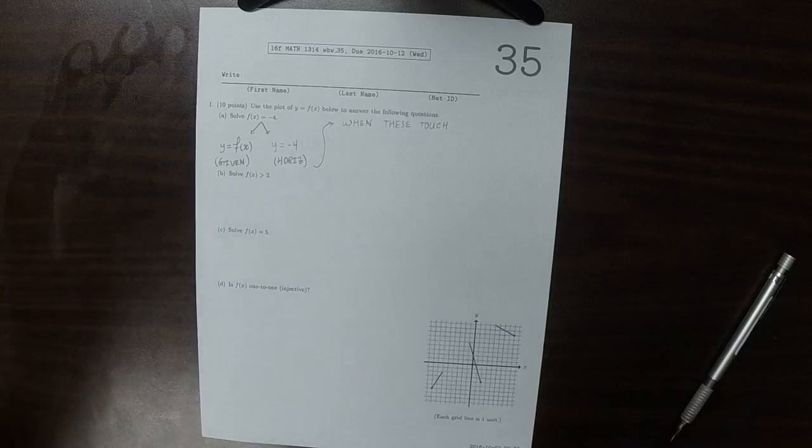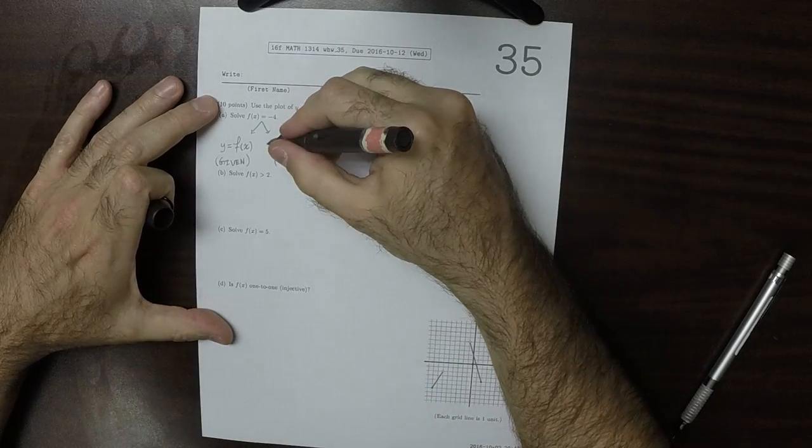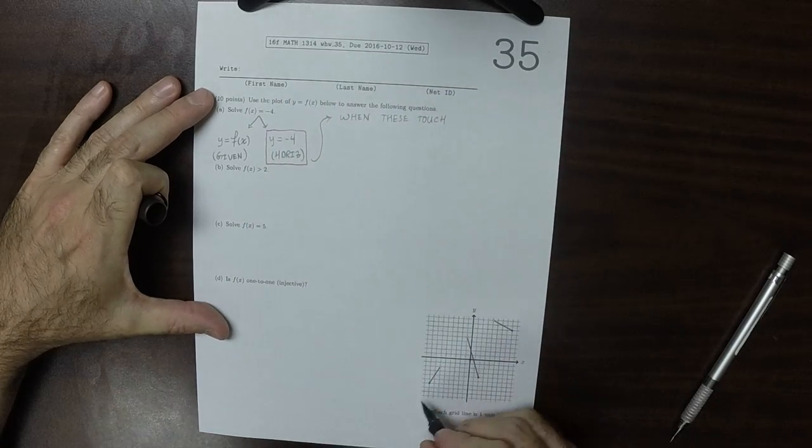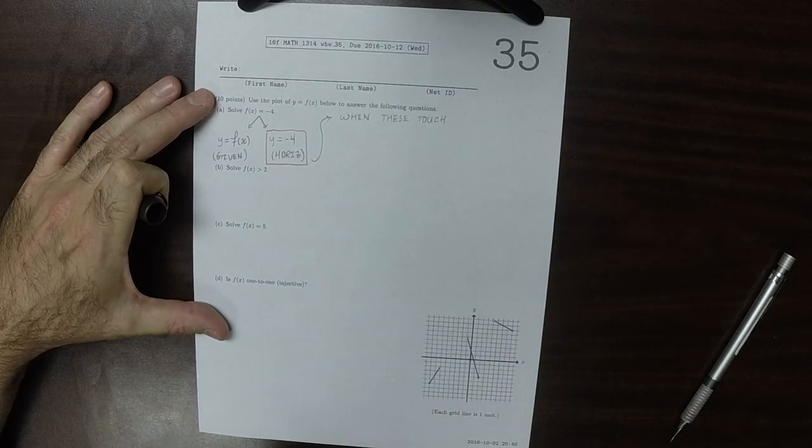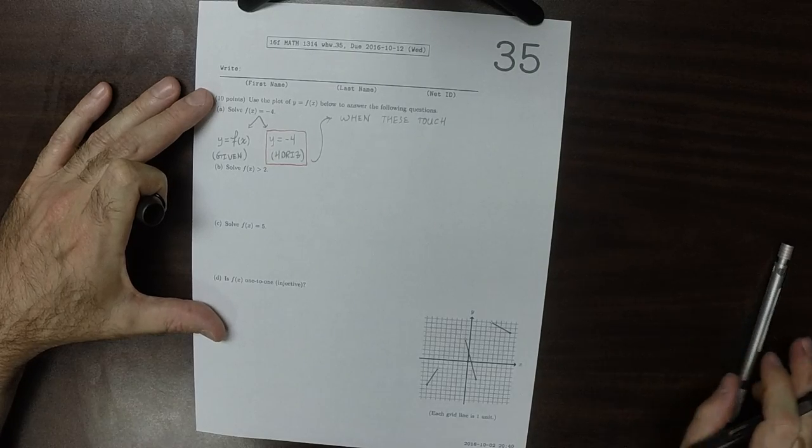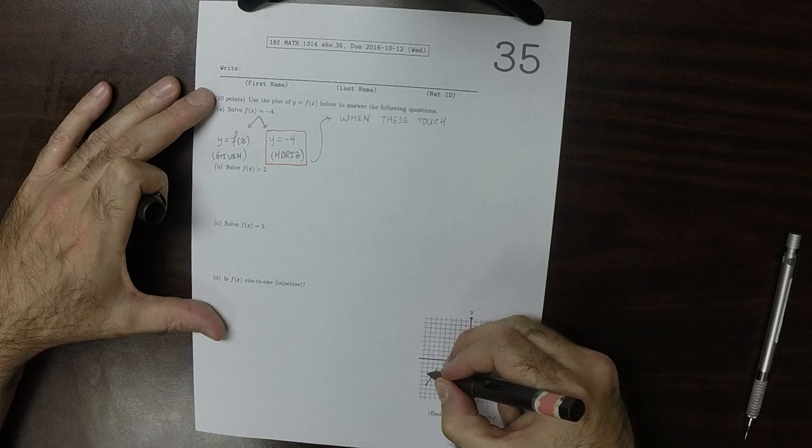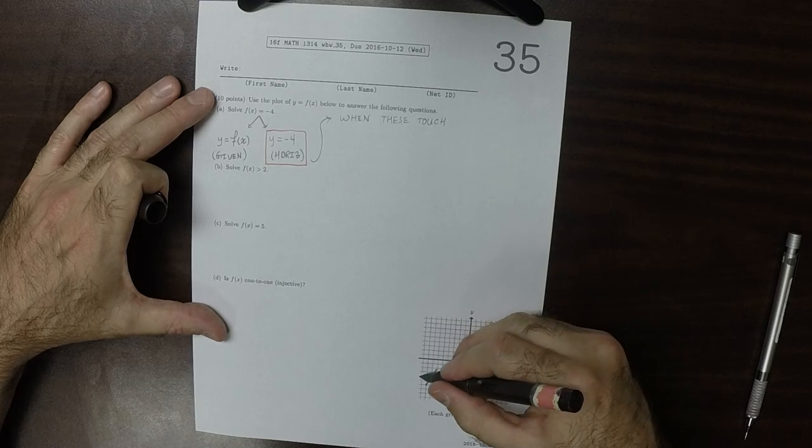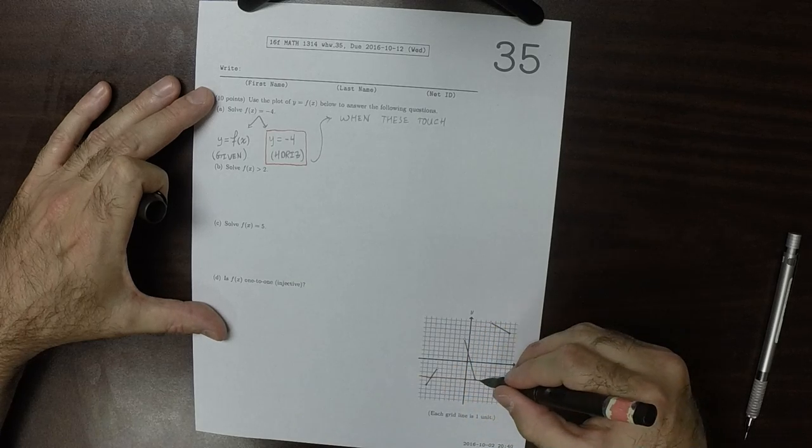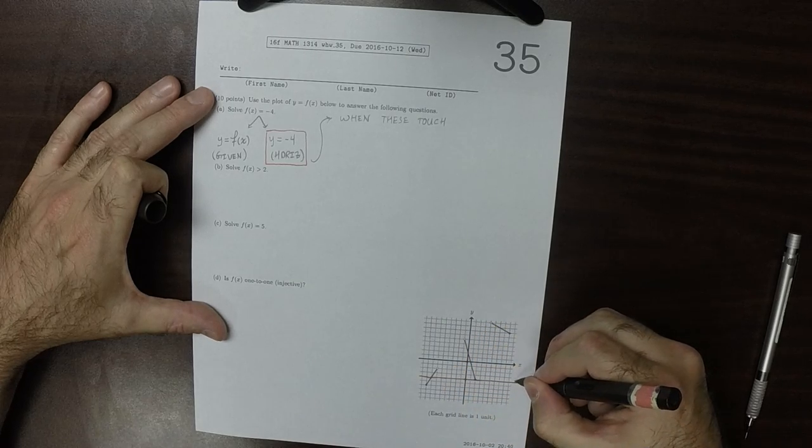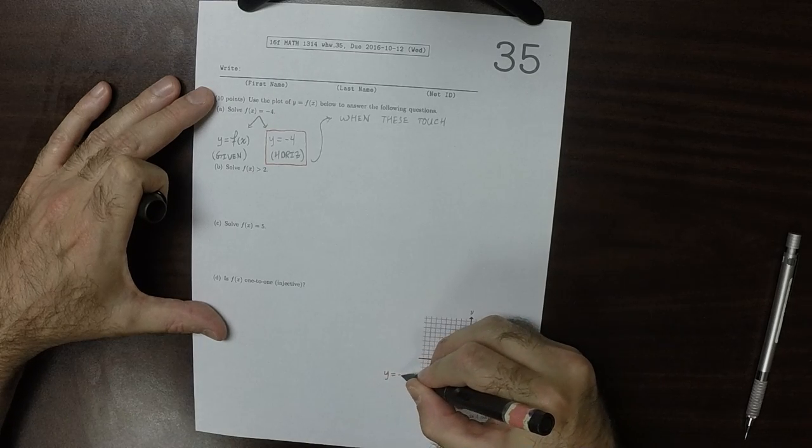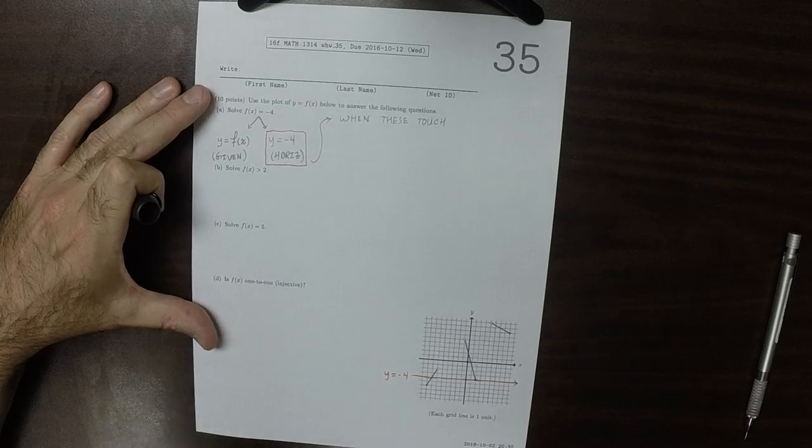So y as f of x is already plotted. I'll plot this in red. So y as negative 4, that is a horizontal line. So that's this. So 1, 2, 3, 4.